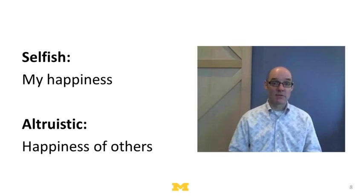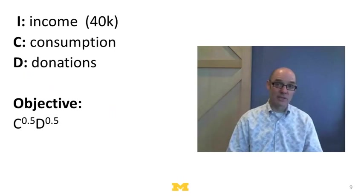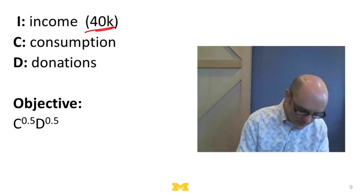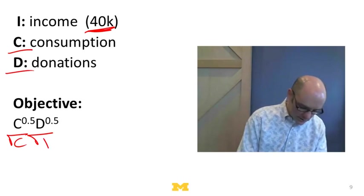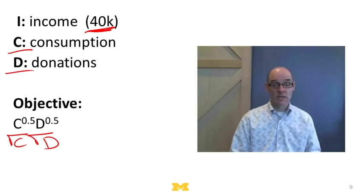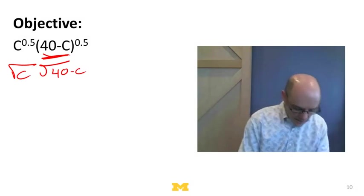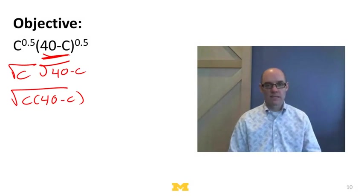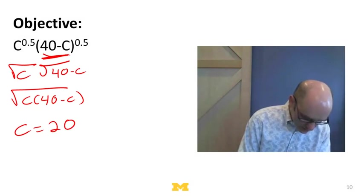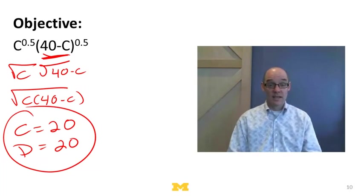Selfishness would just mean my objective function is me — all I care about is my happiness, my income, my wealth. Altruistic preferences mean I care about other people as well. Here's an example involving an altruistic person: suppose someone has an income of $40,000 and must decide how much to consume and how much to donate. Their objective function is the square root of their consumption times the square root of their donations. Donations equal $40,000 minus consumption C, so this simplifies to maximizing the square root of C times (40,000 minus C). The optimal solution is C equals 20,000 and D equals 20,000 — splitting income halfway between consumption and donation.